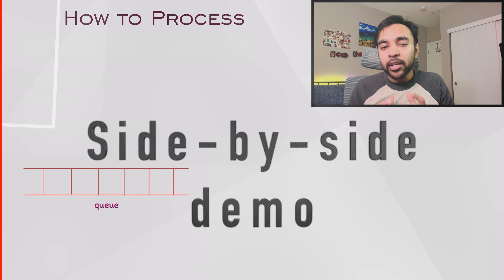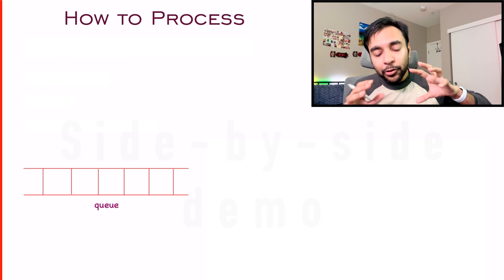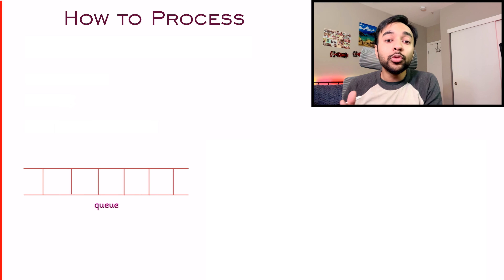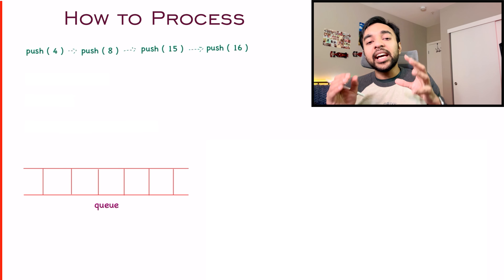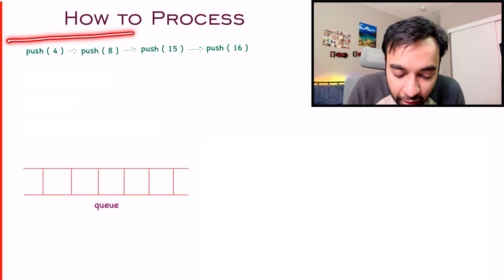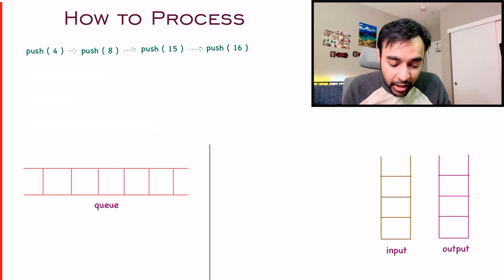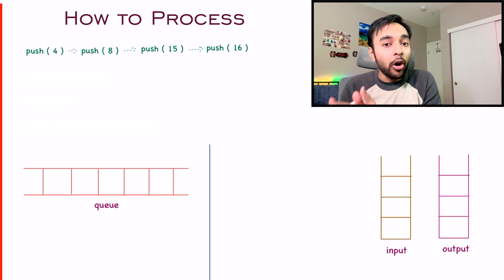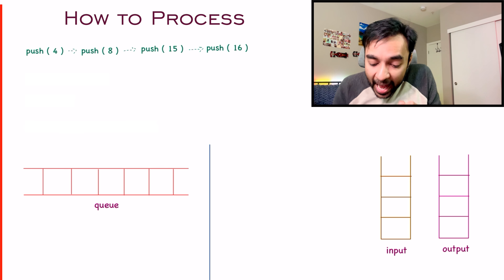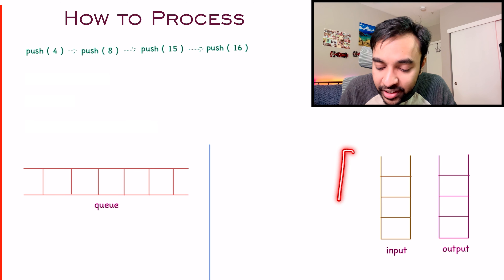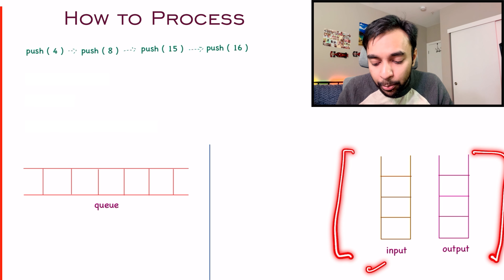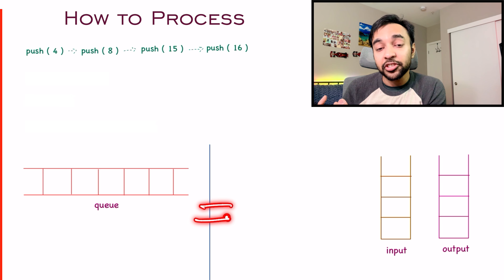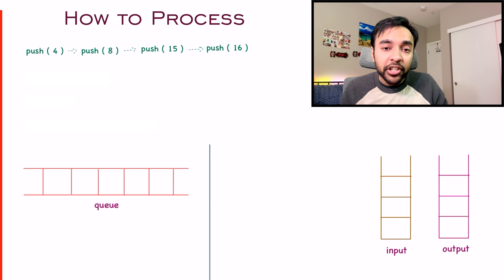When you try to think about a solution to this problem, there isn't really a brute force or optimal approach — there is just a certain way by which you can implement it. Let us say I have some operations — I am making four operations in my queue. On the left hand side I have a standard queue, so we can see how the actual operations will happen in a standard queue data structure. And on the right I have two stack data structures — one is called input and one is called output. We will be trying to mimic the operations of a queue using our stack data structures.